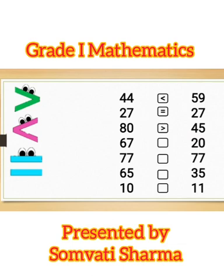67 is greater than 20. And 77 is equal to 77. 65 is greater than 35. And 10 is smaller than 11.